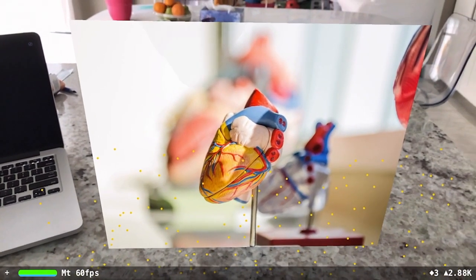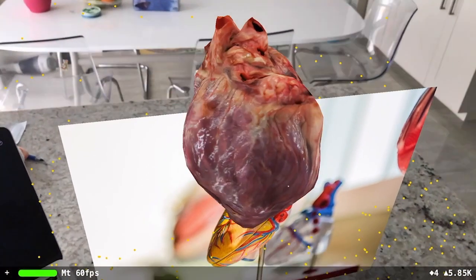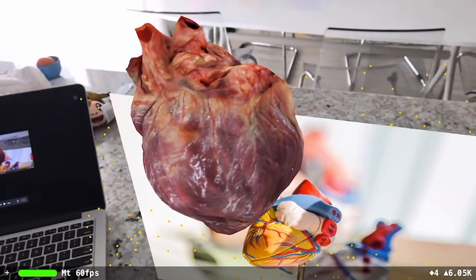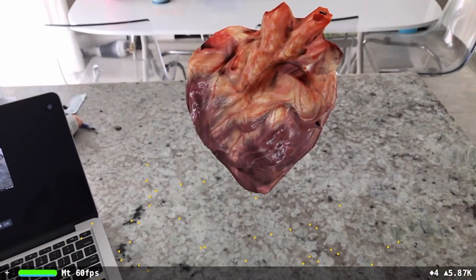So the neat thing about this is that you can actually pop up 3D objects. For example, we have this heart that's actually floating there. So if you're a rep interacting with a cardiologist, you can talk about a heart. Actually, you can look around it by pointing the camera at different angles.